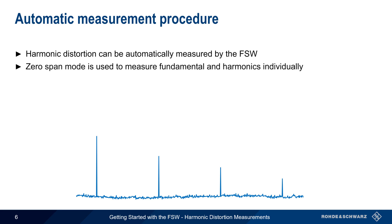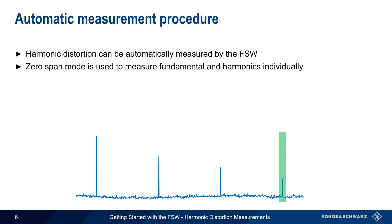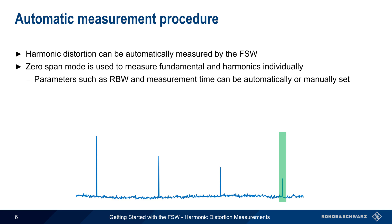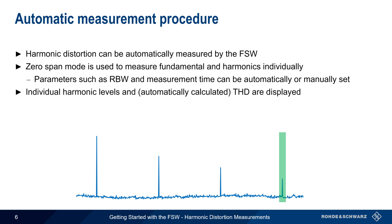The automatic function uses zero-span mode to first measure the level of the fundamental, and then each user-specified harmonic individually. Parameters such as resolution bandwidth and measurement time can be either manually or automatically defined. At the end of the measurement, the FSW displays both the level of the individual harmonics as well as the automatically calculated value of total harmonic distortion. In the remainder of this presentation, we'll go step-by-step through how to configure and use this automated measurement.